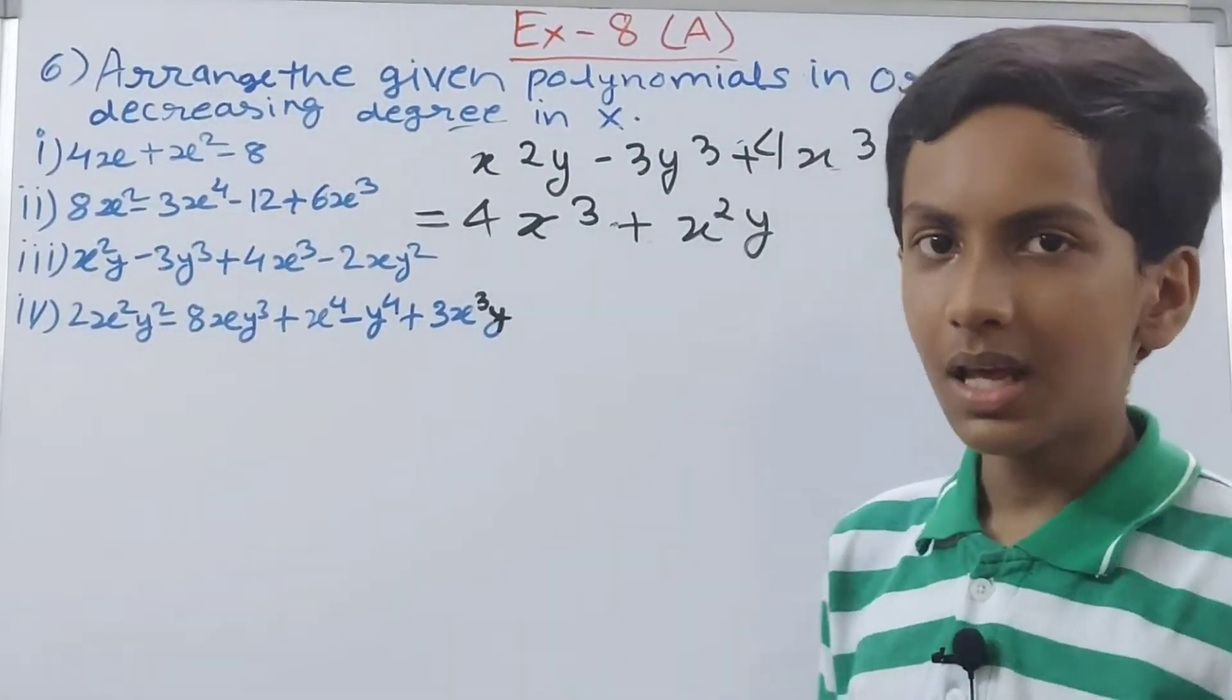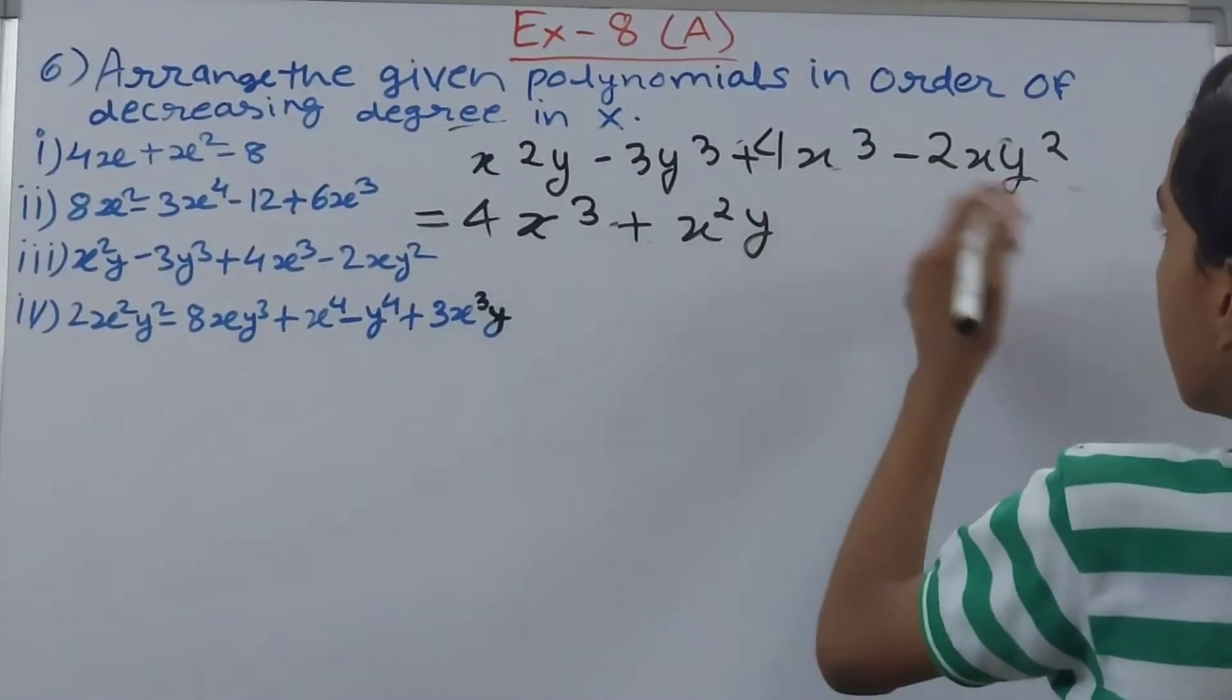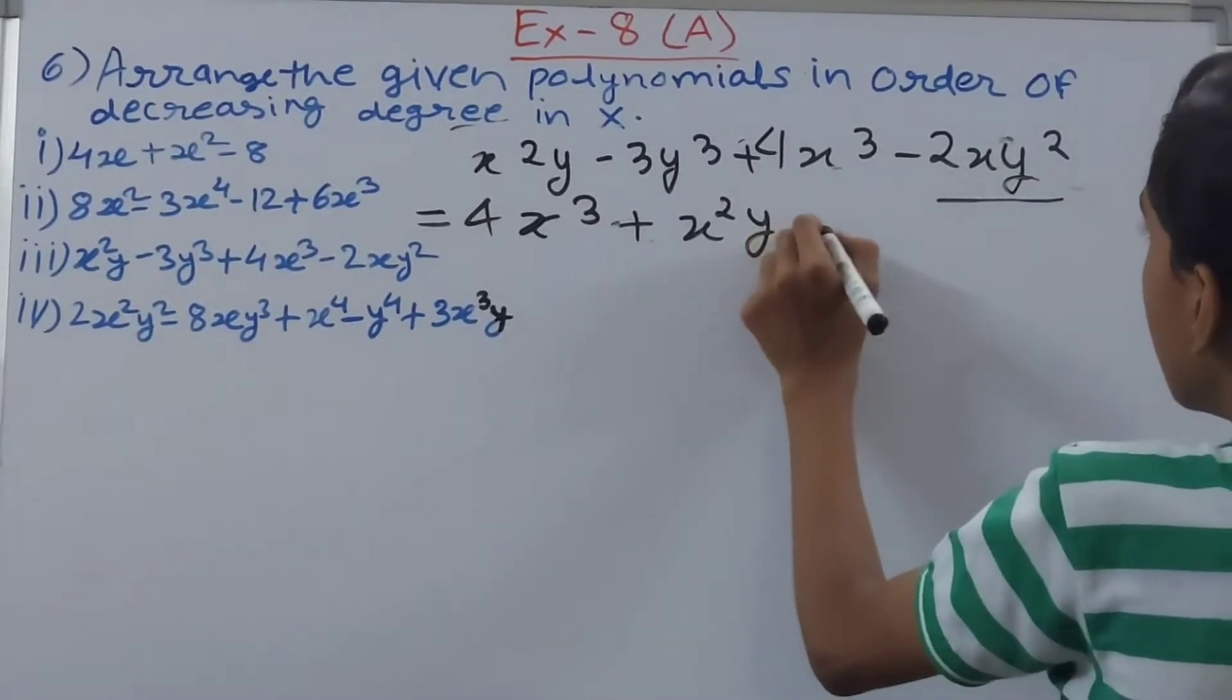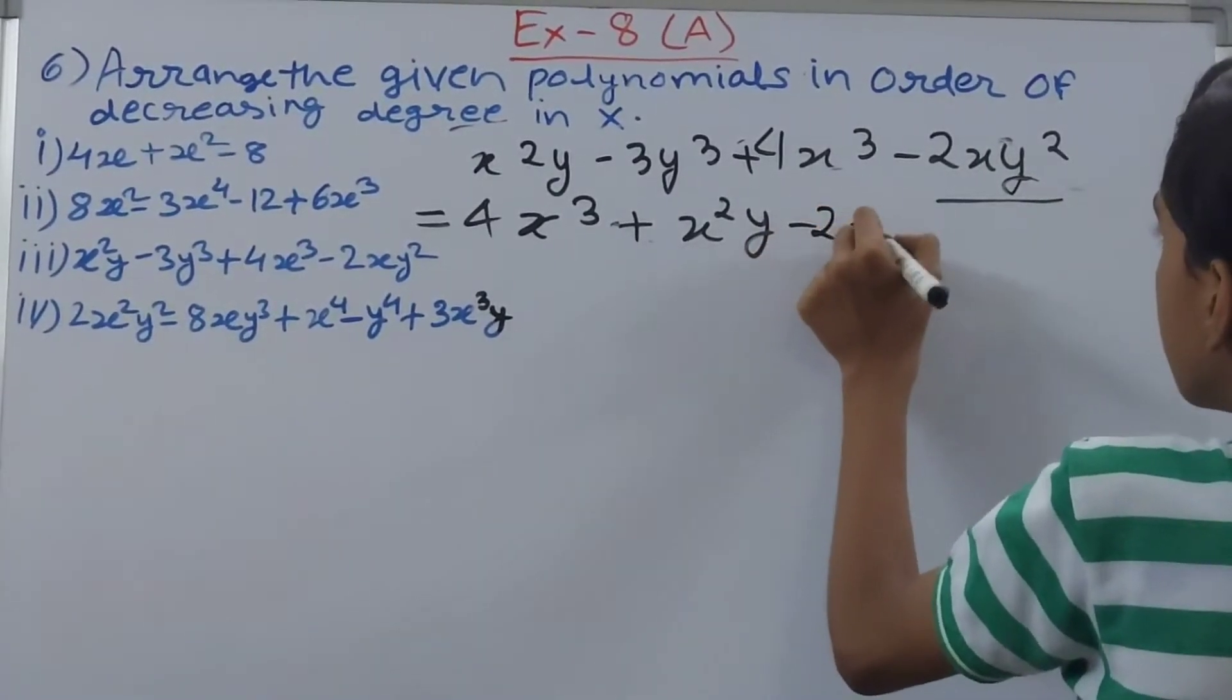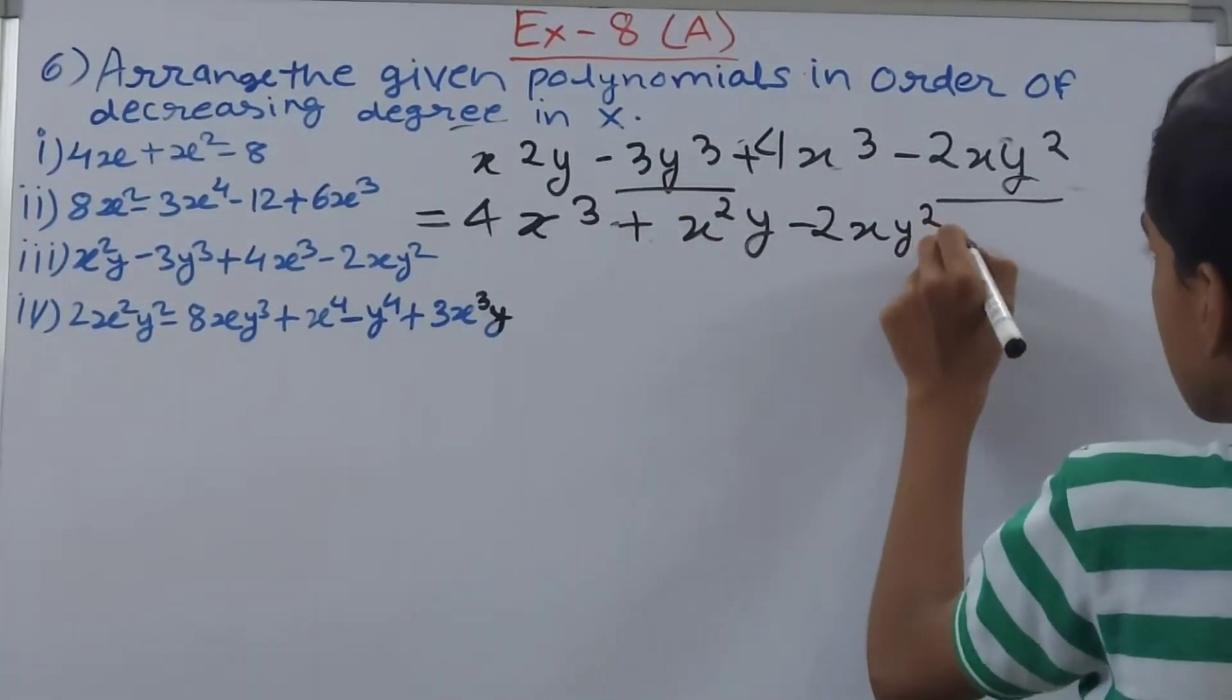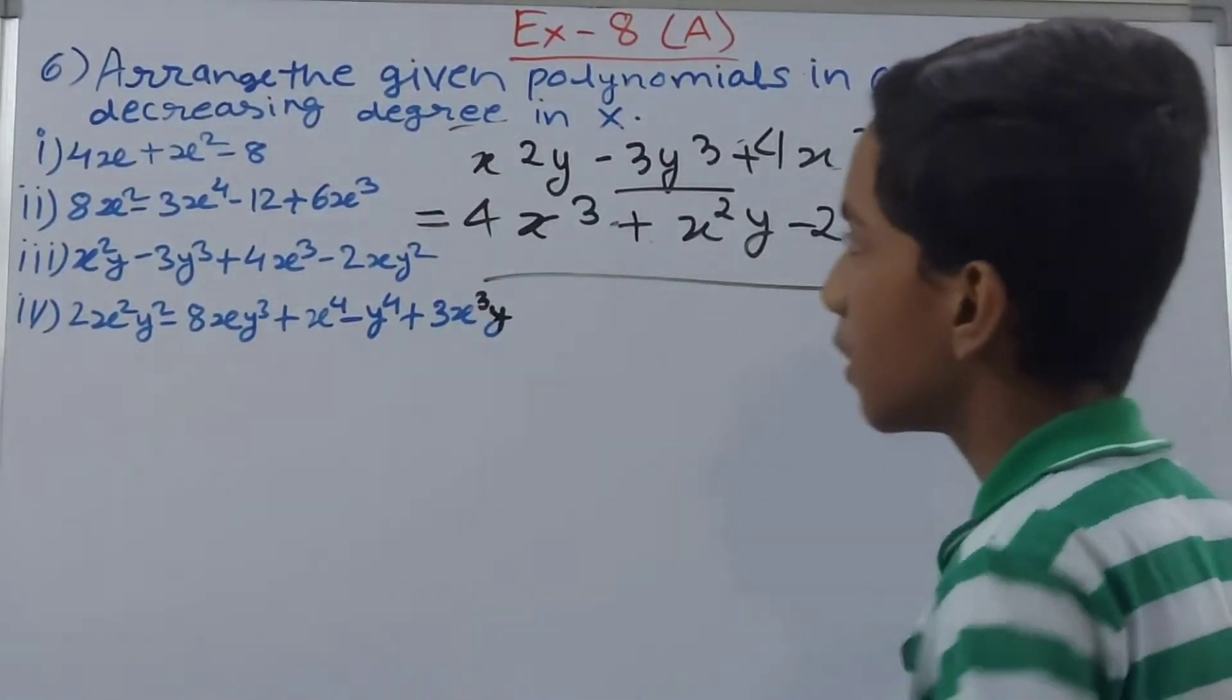Remember, while counting the degree we ignore any other variables, but when we are writing or rearranging them we have to write every single thing with each variable. Next one will be this one which has 1 as a degree, so minus 2xy square, and in last will be this one with no x in it, so minus 3y cube. This has become our answer.